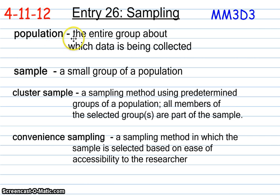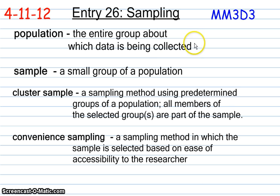A population is the entire group about which data is being collected. In general, you have to think of this as being a large number — the larger the number, the bigger the population. Samples are always part of a population, a small group, so its number is always going to be smaller.